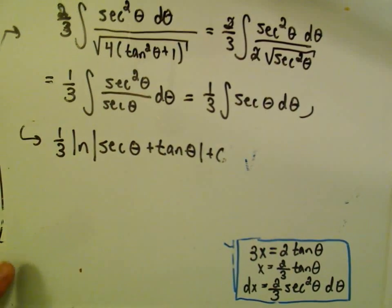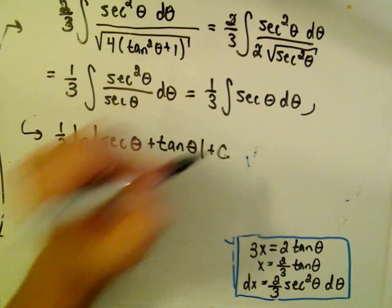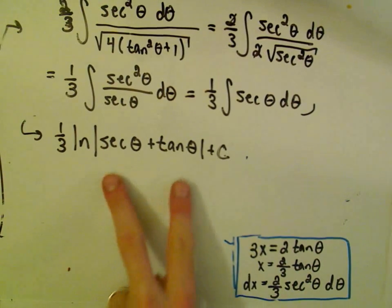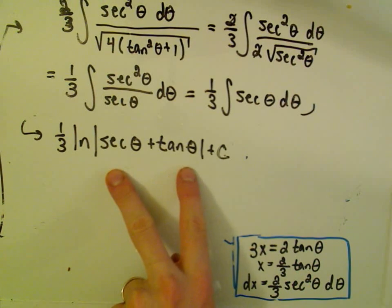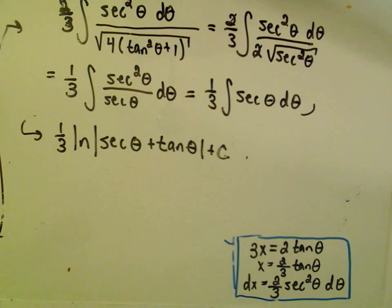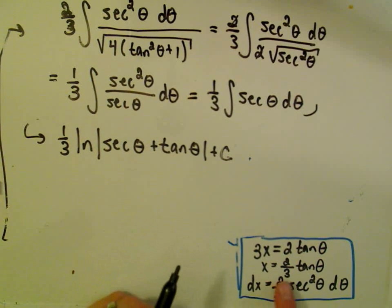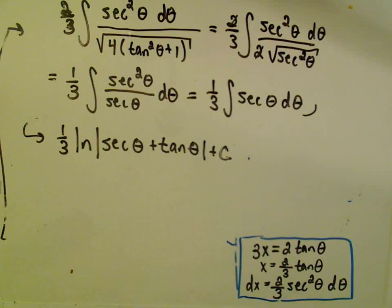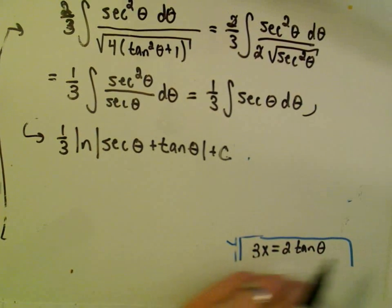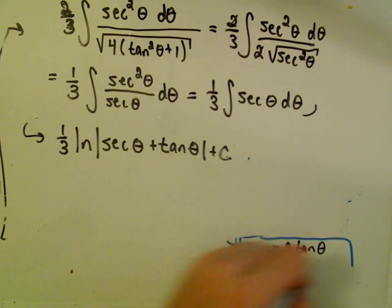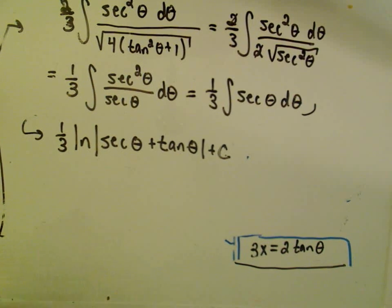So we're getting close. The last thing we need to do in this problem is, we started with x's in our problem, but right now we're left with thetas. So we have to somehow get rid of the thetas in this problem. Well, it all comes back to your substitution. So our very first substitution was 3x equals 2 tangent theta. What you do at this point is make a little right triangle based on this information.